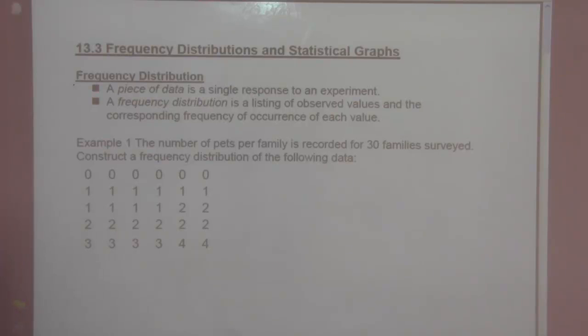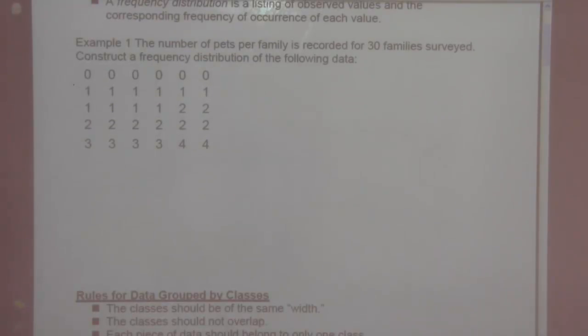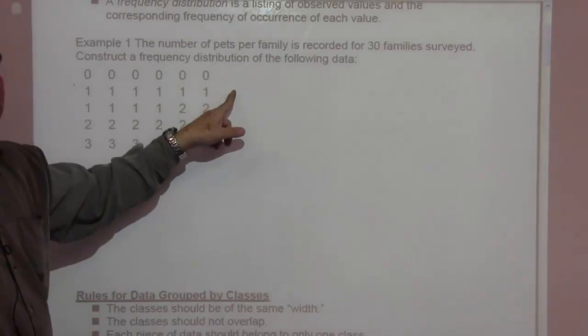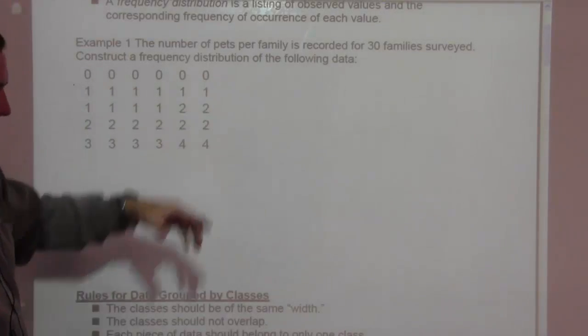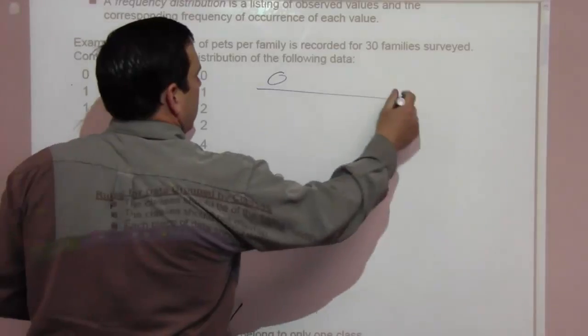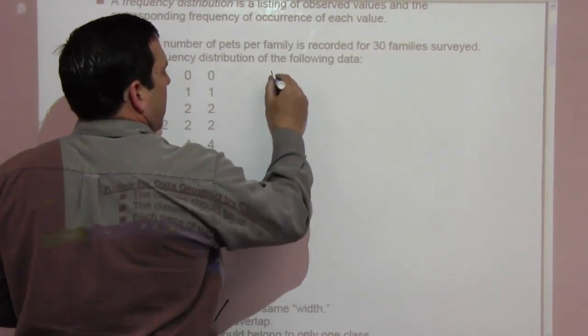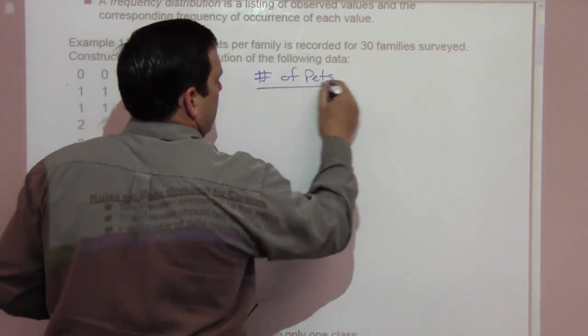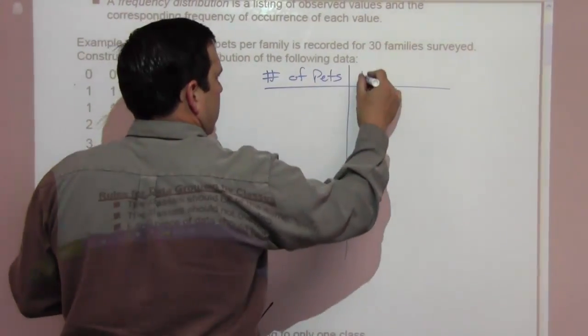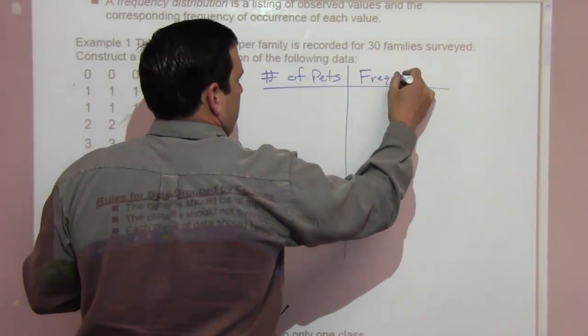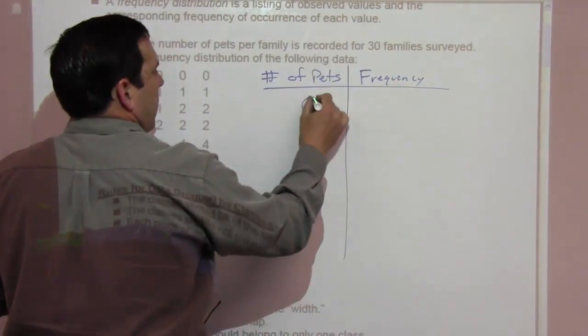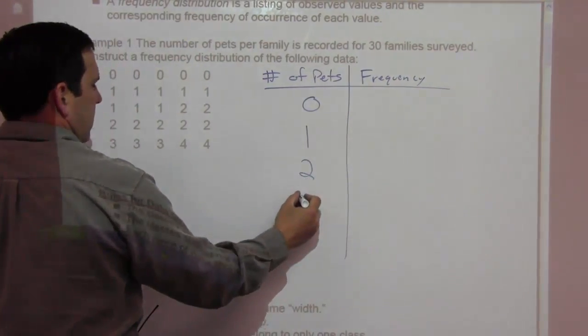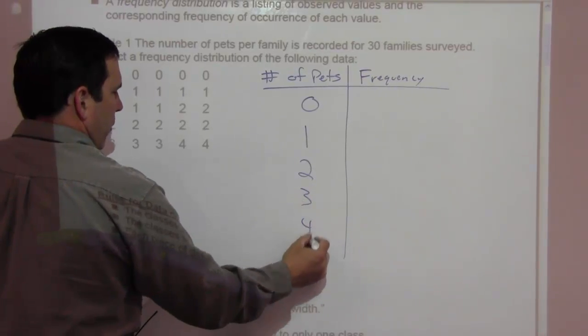The number of pets per family is recorded for 30 families surveyed. Construct a Frequency Distribution of the following data. So you have people with zero pets, probably the smart people, one, two, three, four, five, six. We'll have number of pets and the frequency. People have zero pets, one pet, two pets, three pets and four pets.